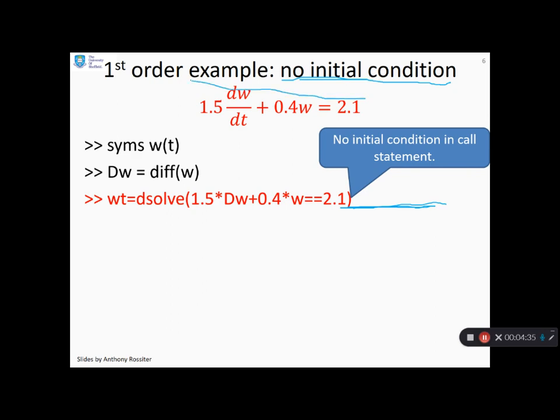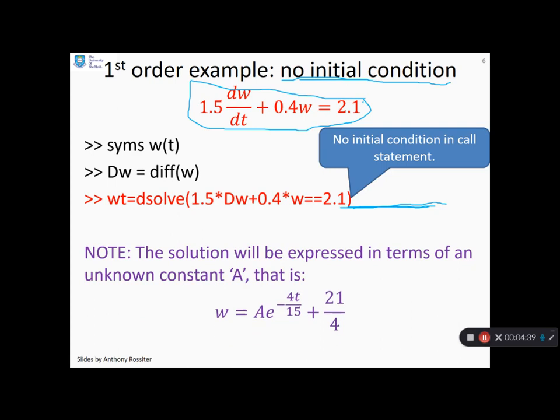Well clearly, if you had this problem on a piece of paper and you were asked to solve it this is what you'd come up with. You would say there's going to be some unknown constant which I can't define and here's my solution down here which comes out in terms of the unknown constant. And MATLAB will do exactly the same. It will give you this solution with some unknown variable. Here I've called it capital A.